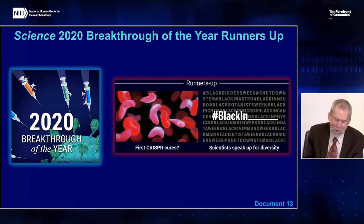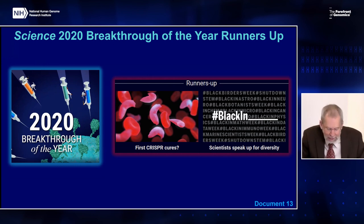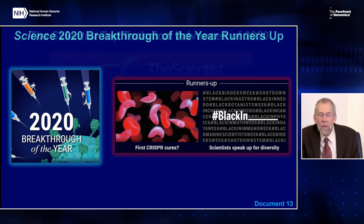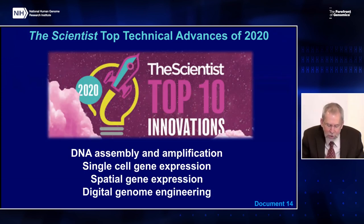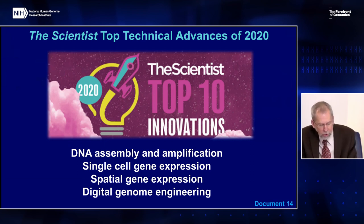Although the Science breakthrough of the year went to the development of the first vaccines to protect against COVID-19, there were two runners-up of particular interest to the genomics community: therapeutic applications of gene editing and scientists speaking out for diversity. The Scientist's top 10 innovations of 2020 included an automated platform for on-demand DNA assembly, a single-cell gene expression system, a spatial gene expression system, and a digital genome engineering platform.